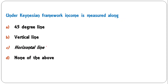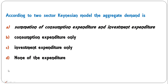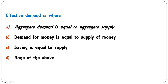According to the two-sector Keynesian model, aggregate demand is the summation of consumption expenditure and investment expenditure, consumption expenditure only, investment expenditure only, or none of the above? The correct answer is A — the summation of consumption expenditure and investment expenditure.